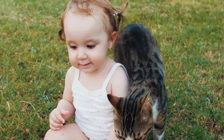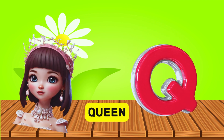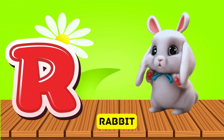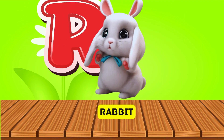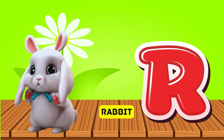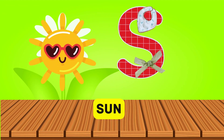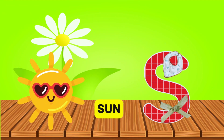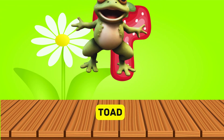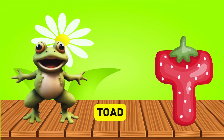Q is for queen, k-k-queen. R is for rabbit, r-r-rabbit. S is for sun, s-s-sun. T is for toad, t-t-toad.